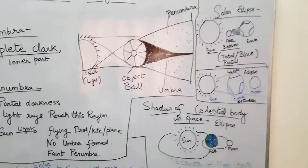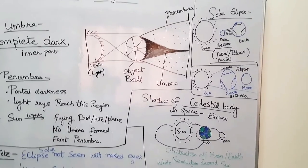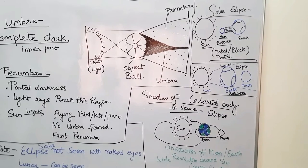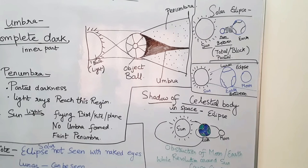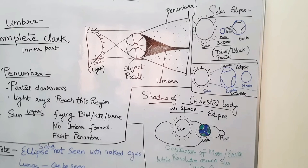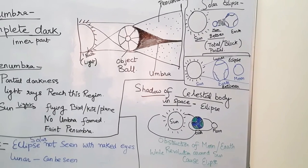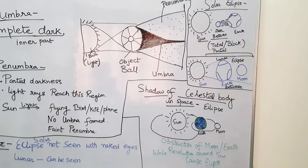An eclipse is the shadow of a celestial body in space. Celestial bodies include planets and their satellites like the moon and earth. The sun is the main source of light in our galaxy. The earth revolves around the sun and the moon revolves around the earth. At certain periods of revolution, there is an obstruction between the moon and earth while revolving around the sun — and this causes an eclipse.